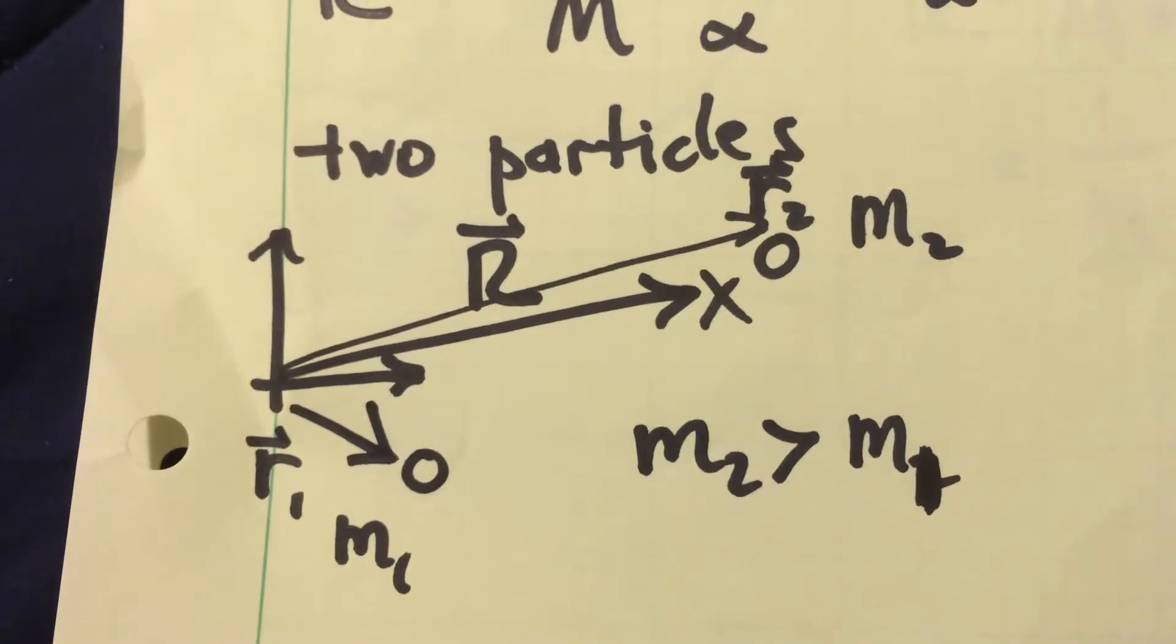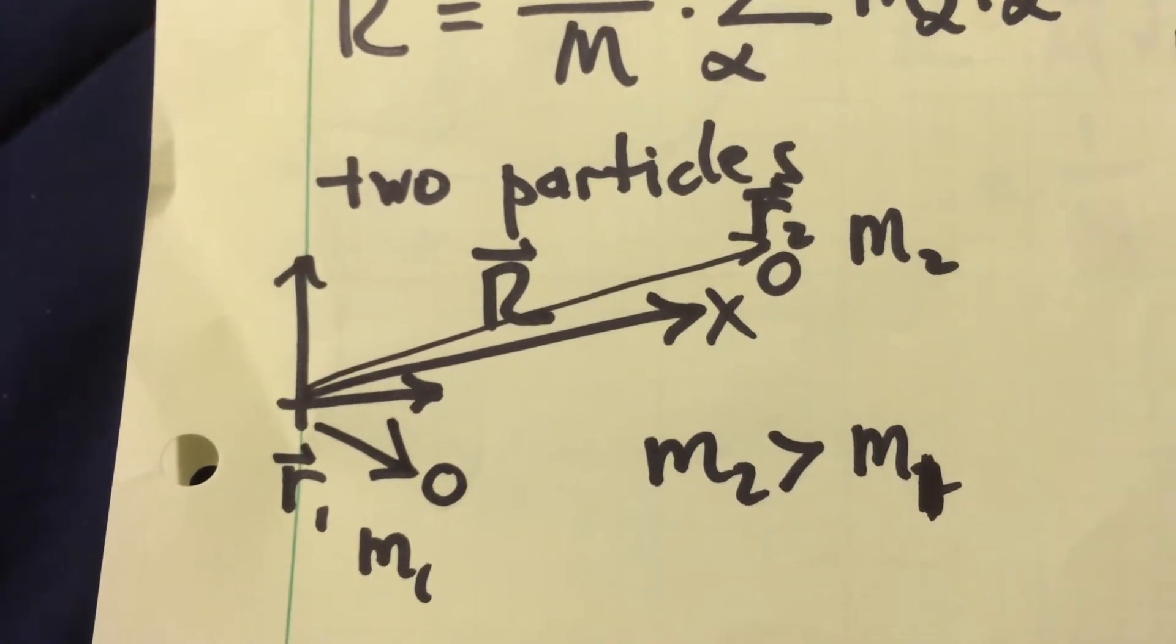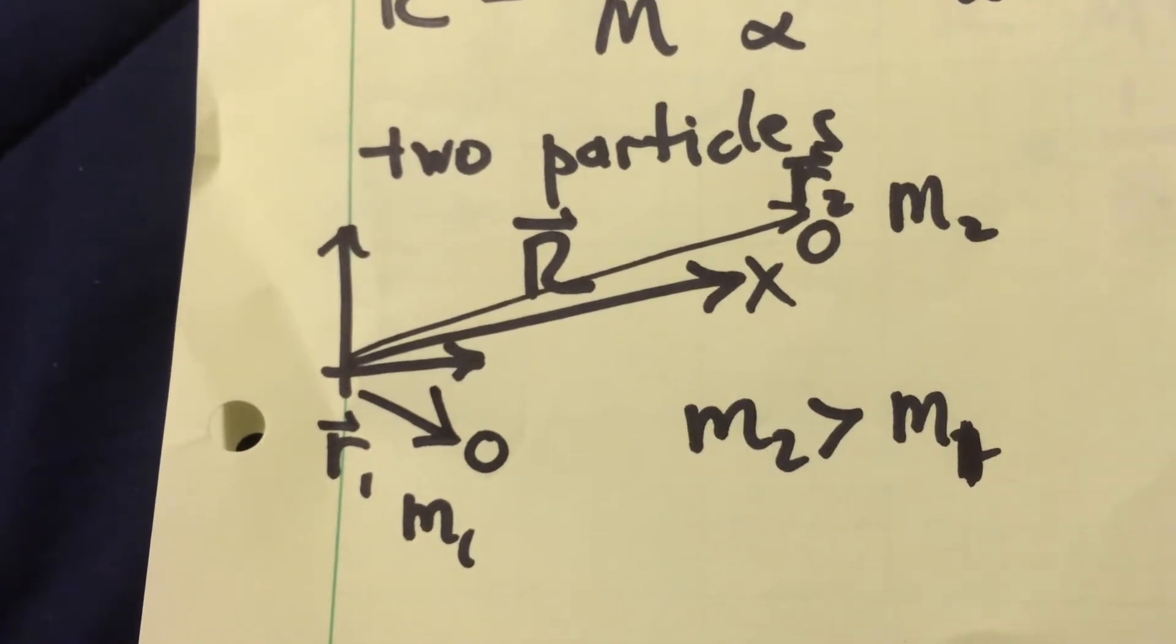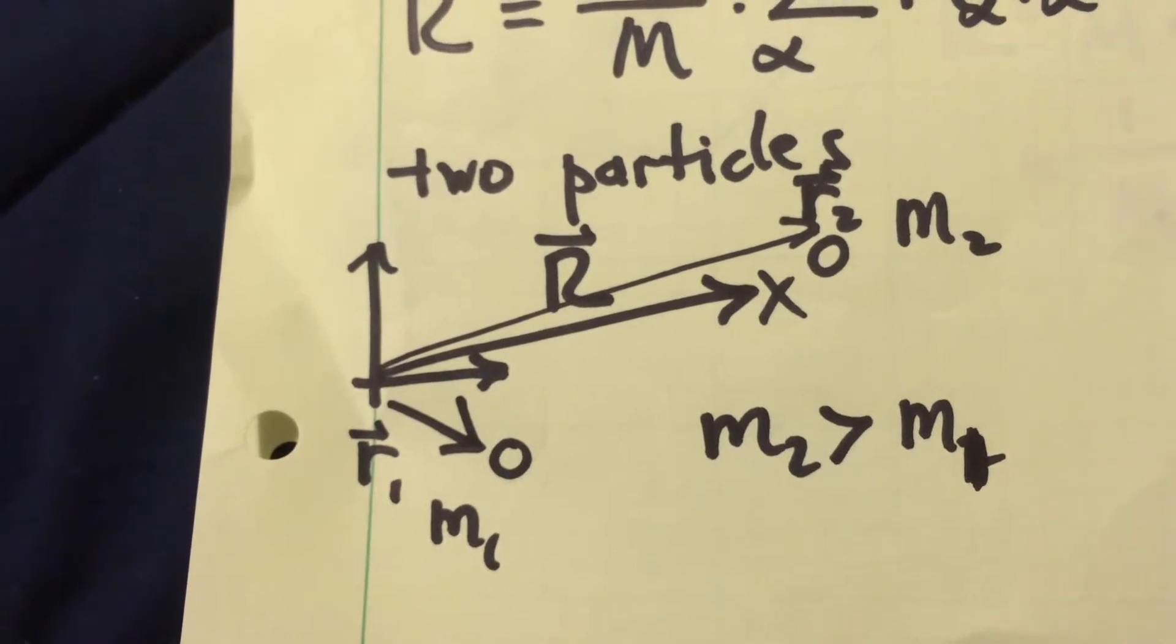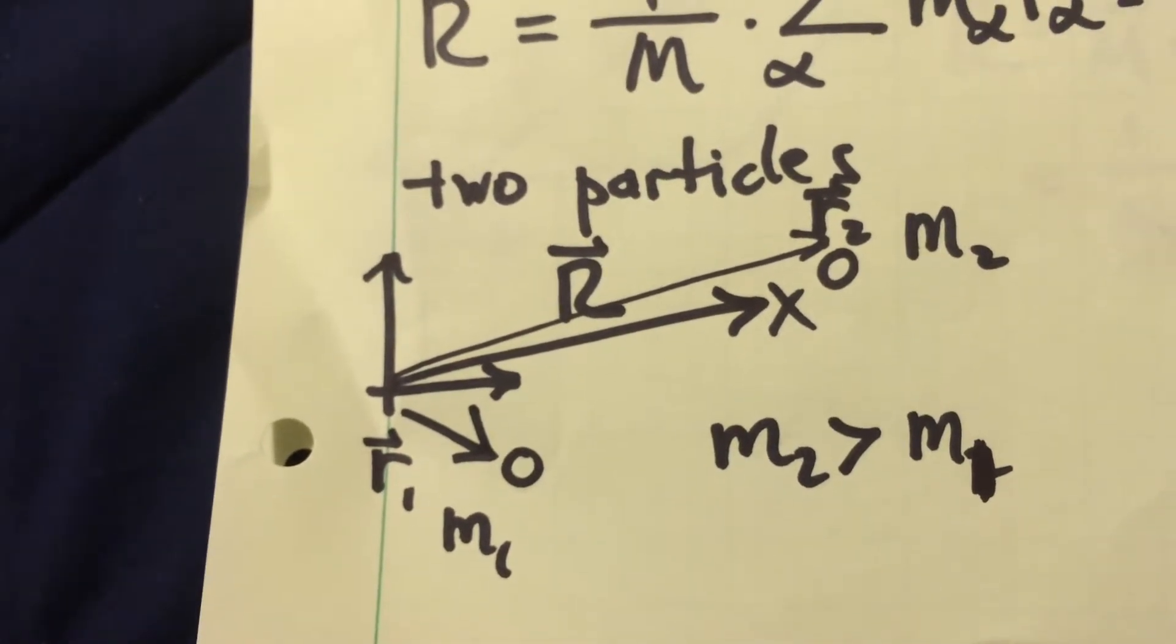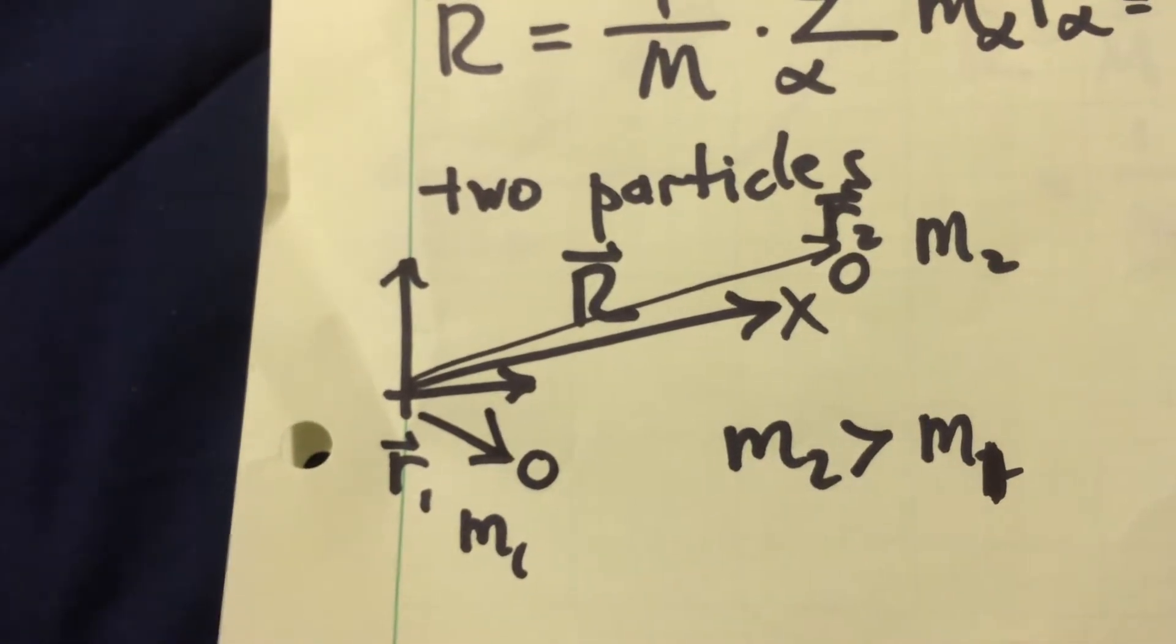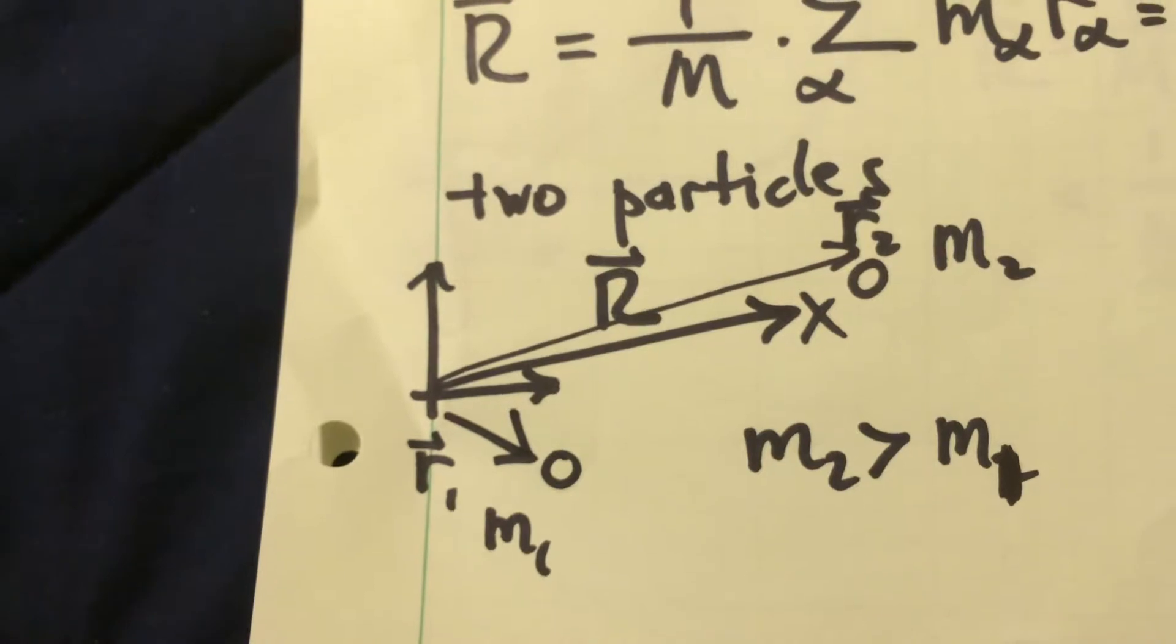If, for example, we had a system of two particles, m1 and m2, the position of the center of mass, capital R vector, is going to lie along the line connecting m1 to m2. If we imagine that m2 is greater than m1, so the mass of the second particle is bigger than the mass of the first particle, then the position of the center of mass is going to be slightly weighted toward the position of m2.